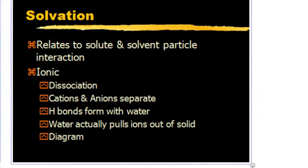When we're talking about solvation, there are two types of solvation that we look at: ionic solvation or molecular solvation. When an ionic substance dissolves in water, we've talked about this before, ionic substances dissociate, meaning they separate. The cation separates from the anion. Hydrogen bonds are formed with the water, so the water actually pulls each of the ions out of the solid and into solution.